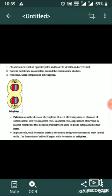Cytokinesis is the division of the cytoplasm of a cell after karyokinesis, dividing the cell into two daughter cells. In animal cells, furrows appear in the plasma membrane that deepen gradually and join to divide the cytoplasm into two parts.